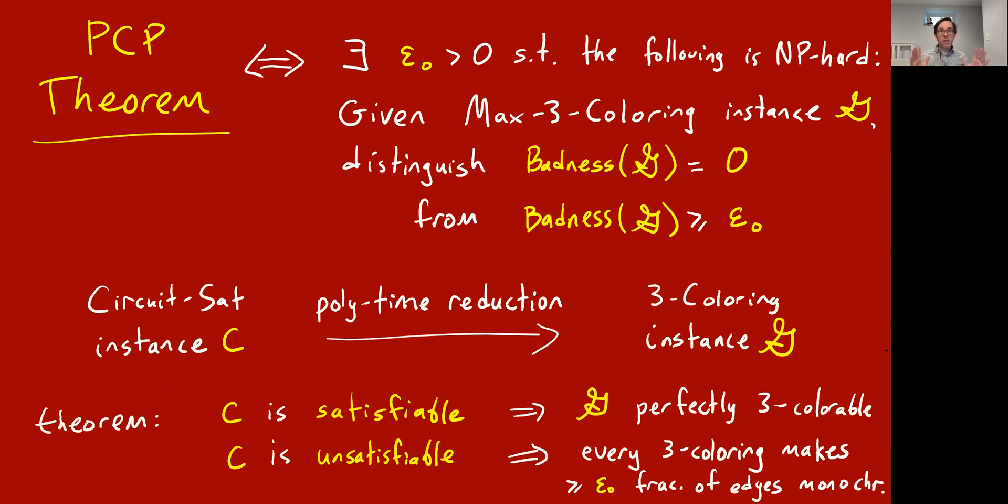It's an NP-hardness result, just like those classic NP-hardness results you proved as an undergrad, just much more complicated. It's a polynomial time reduction from an NP-hard problem, let's say the most canonical one, circuit sat. It takes a circuit sat instance, which is a circuit C, and outputs a three-coloring instance G, so converts circuits to graphs. It has the following theorem. This is the key aspect of it. There are two cases. If C is satisfiable, then the graph that's output has a perfect three-coloring. And if C is unsatisfiable, then every three-coloring makes at least an epsilon-knot fraction of edges monochromatic, so badness is at least epsilon zero when C is unsatisfiable.